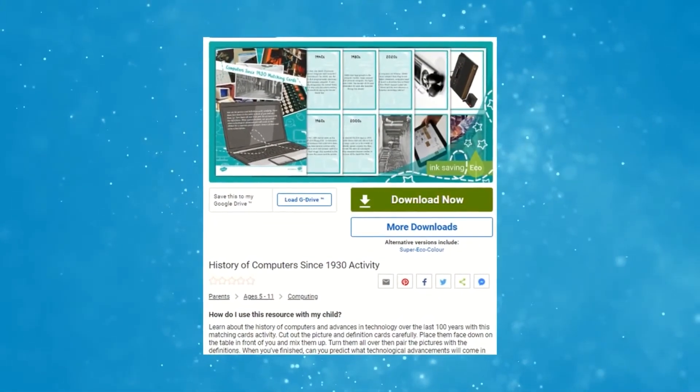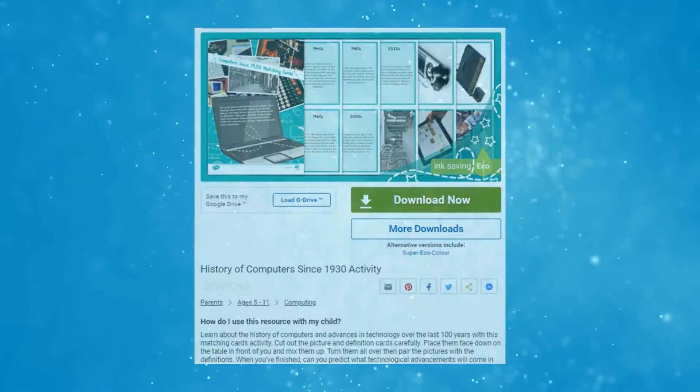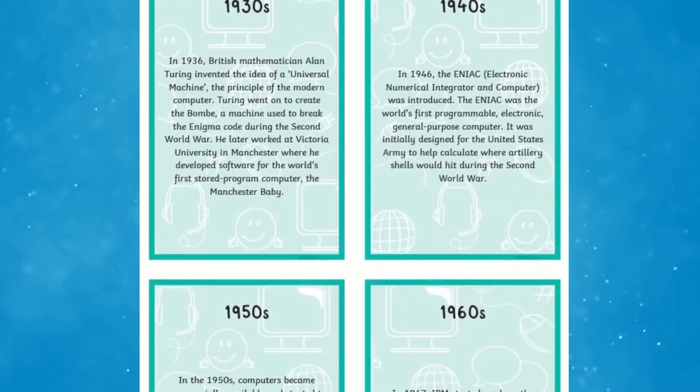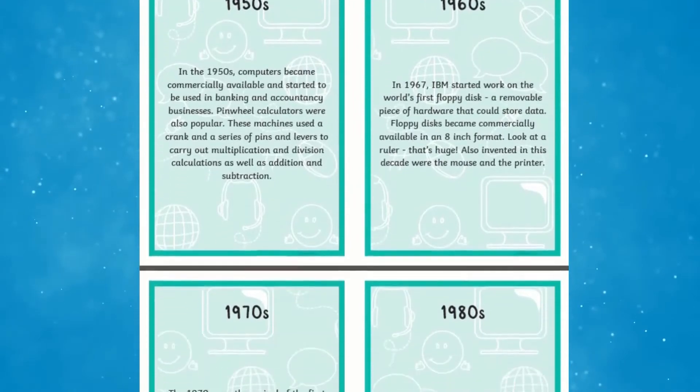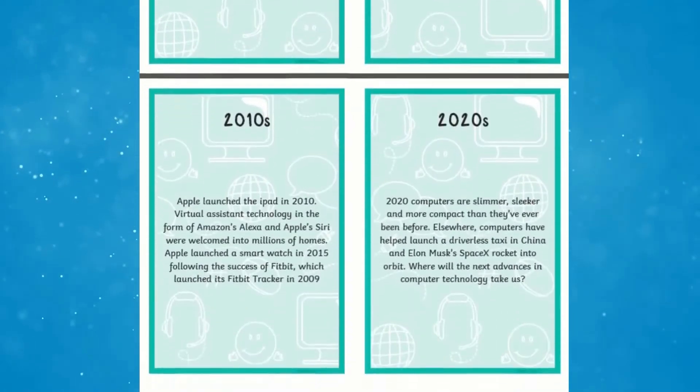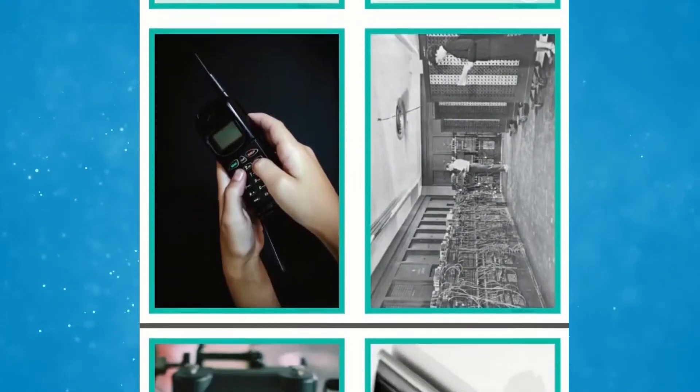Firstly, why not explore the history of computers and look at the different types of technology over the years using these matching cards. These cards explore the history of computers and advances in technology over the last 100 years. You'll find a range of definition cards exploring each decade in which children can read independently or in pairs, and you can even find picture cards.